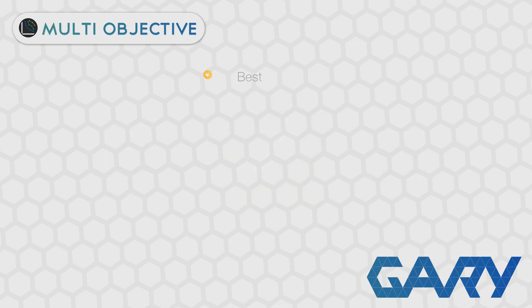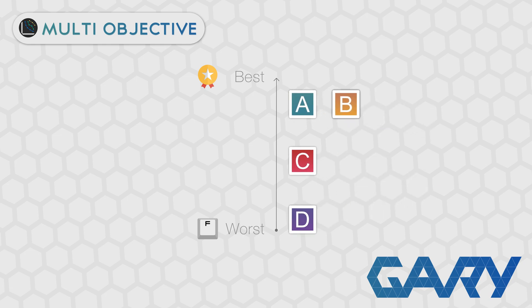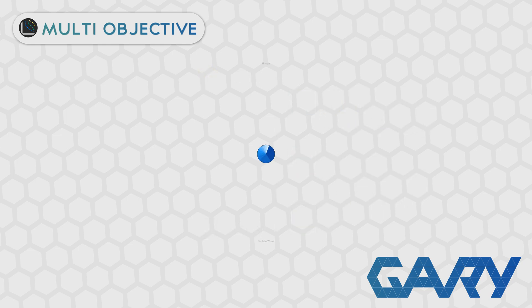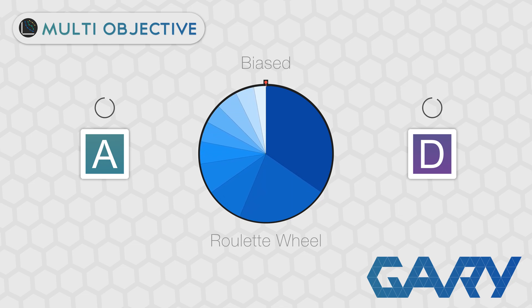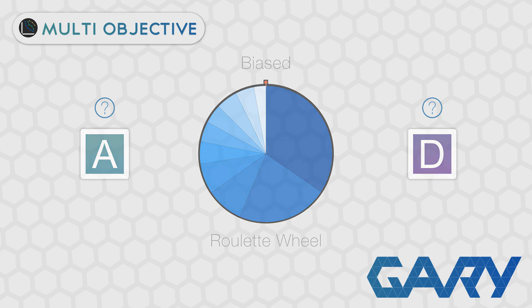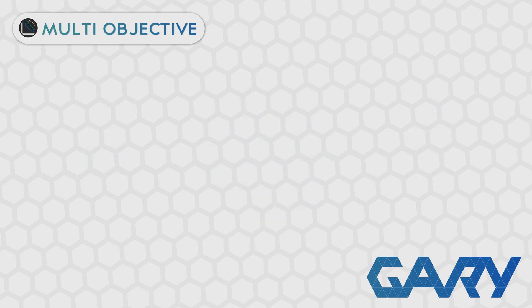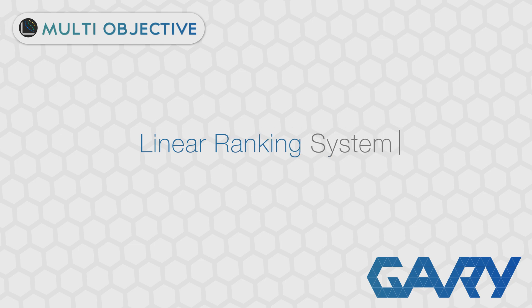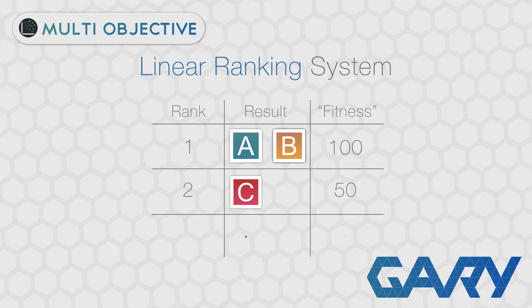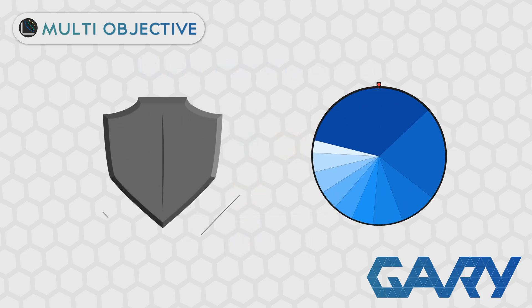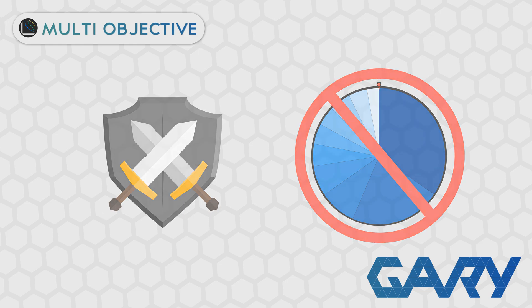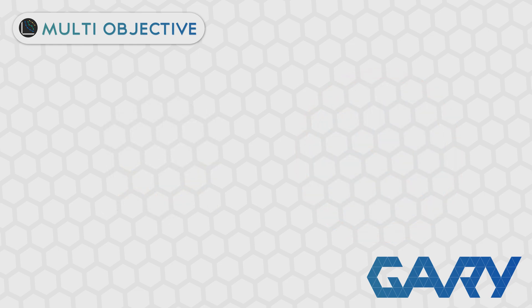While we now have a way of ordering our population from best to worst, this still doesn't directly translate into a single fitness value we can use with our existing selection techniques. We are using two selection techniques: binary tournament selection, where we pick two random potential parents and whichever has the higher fitness is chosen — this can still be used since we have a ranking. Our second method, the biased roulette wheel, can no longer be used as we don't have a single numerical probability value. So we are going to use only tournament selection moving forwards.